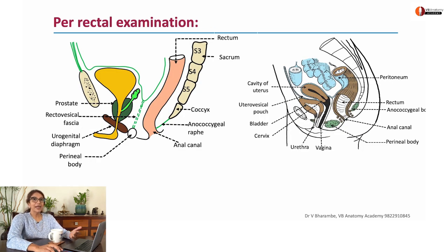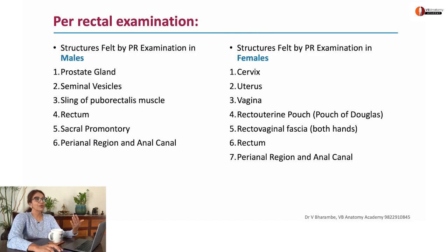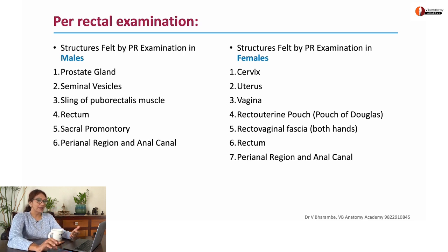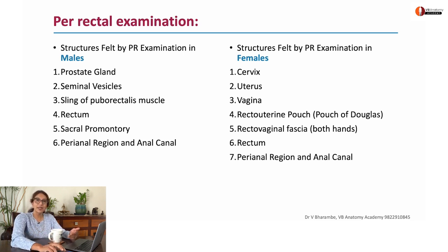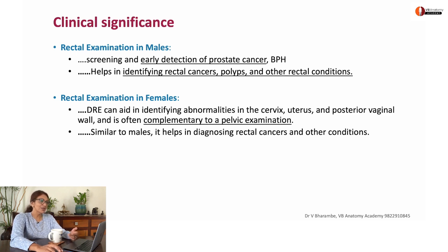If you are doing a per rectal examination, what will you find in a patient? In a male, with a gloved finger you can feel the prostate gland, the seminal vesicles, the puborectal sling, the rectum, sacrum, and the perianal region. In the female you can use this as an adjunct to examine the cervix, uterus, and vagina, in addition to everything else examined in males. In the male, rectal examination is used as an early detection tool for prostatic enlargements and to detect rectal cancers, polyps, and other rectal conditions. In the female it serves as a complementary pelvic examination.